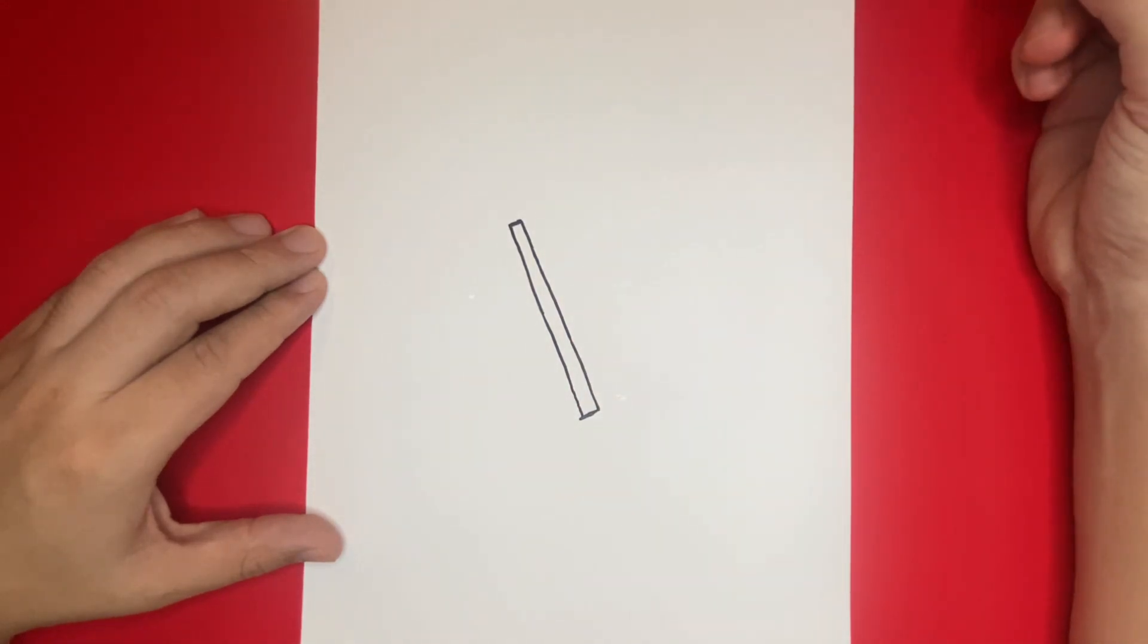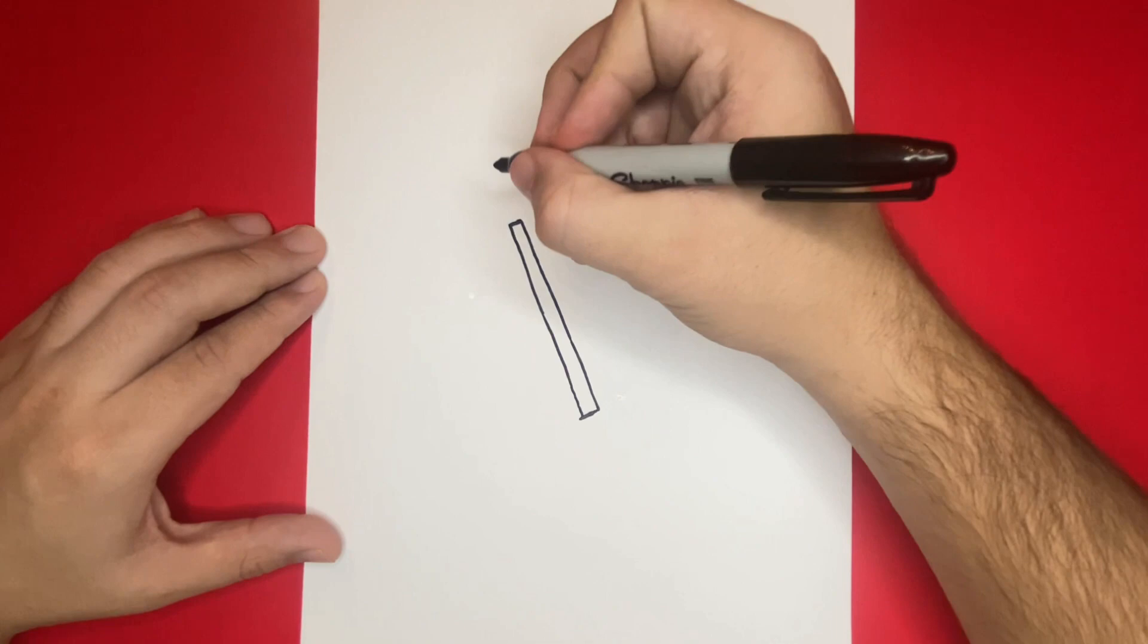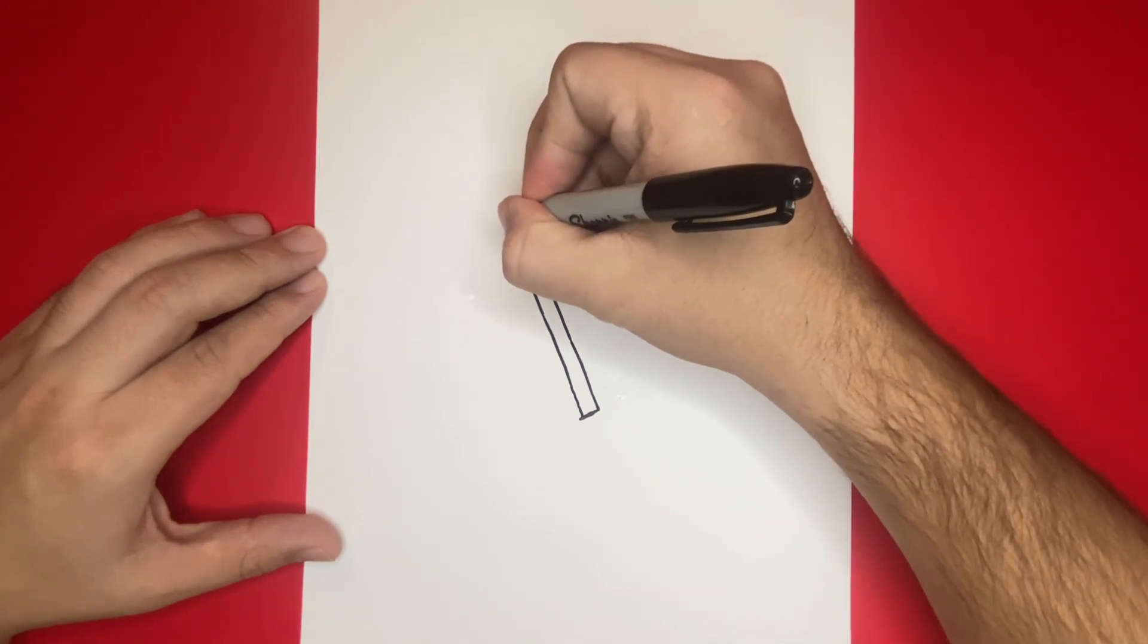Fantastic! Now, on top of the shape that we just drew, let's go ahead and draw a circle. This will be the top of our flagpole.